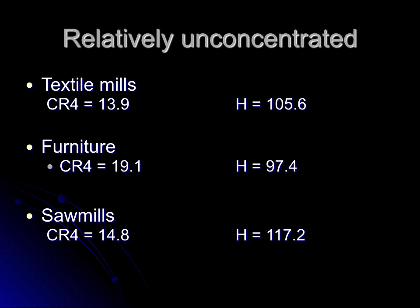For relatively unconcentrated industries, the Herfindahl Index values are quite low. The Herfindahl-Hirschman Index for textile mills is 105, for furniture 97.4, and for saw mills 117.2. These are industries that are much more competitive and far less concentrated than the tight oligopolies.